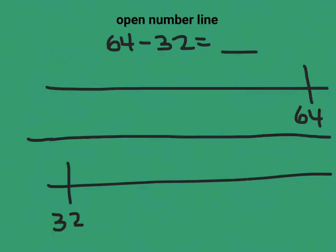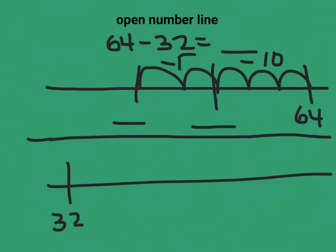Now we'll take a look at subtracting on an open number line. There's two ways that students can do this, so I'm going to model both ways. The first way is to start at the number 64 and to jump back three tens and then two ones. So here I am at 64: 10, 20, 30. These are all jumps of 10. Then I'll jump back two: one, two. These are jumps of one.